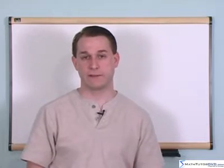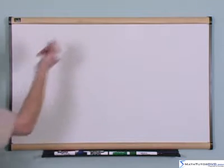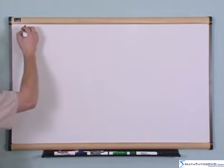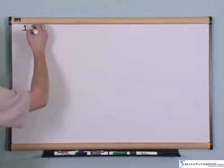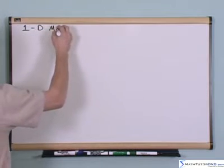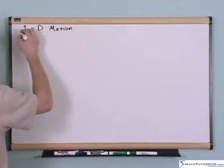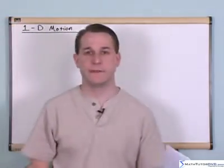Without wasting any more time, let's just get right to it. The first thing we're going to talk about in this class is the first thing in almost every single physics book ever printed, and that's one dimensional motion. That's generally going to be the first topic you have in physics.